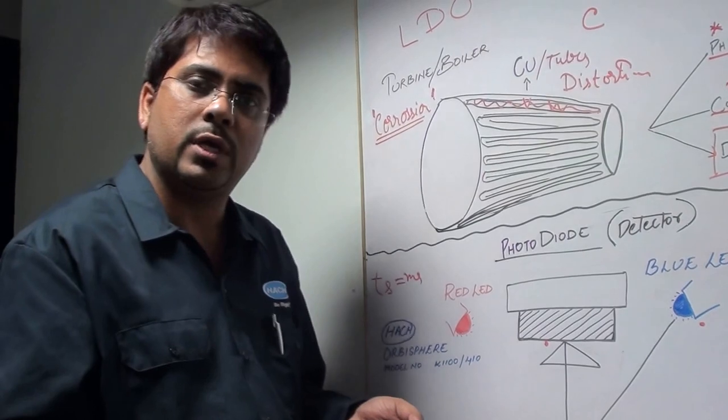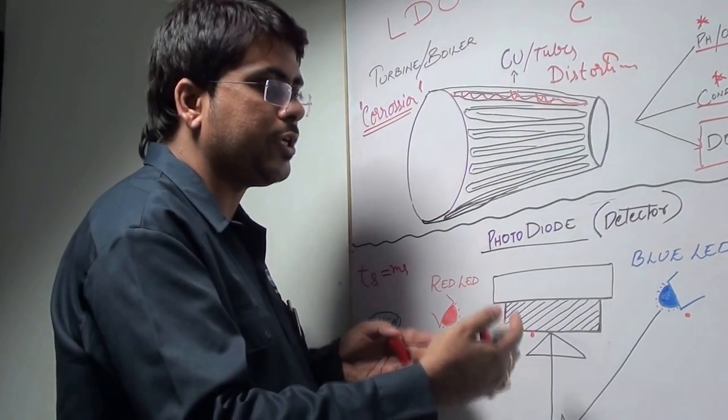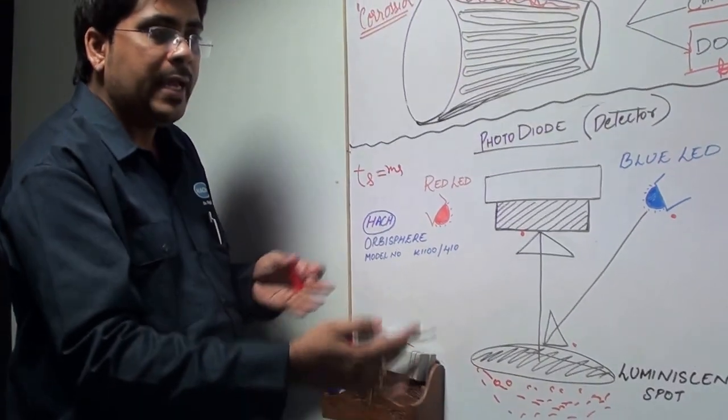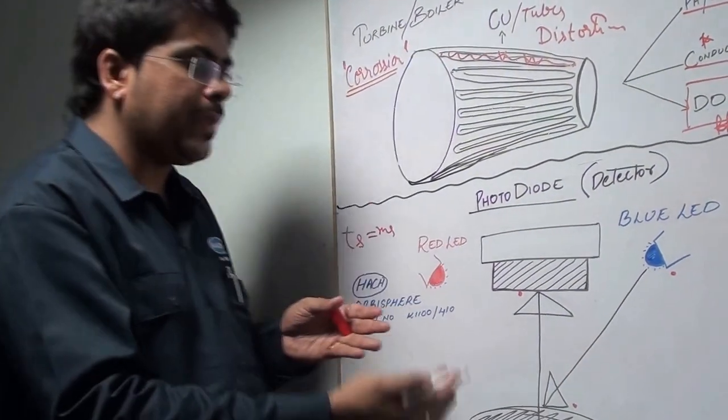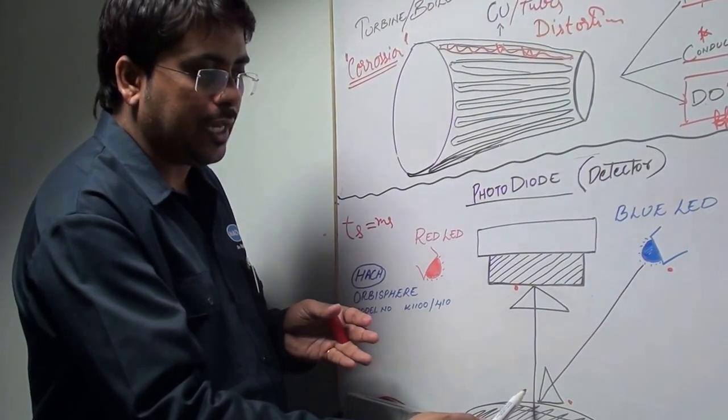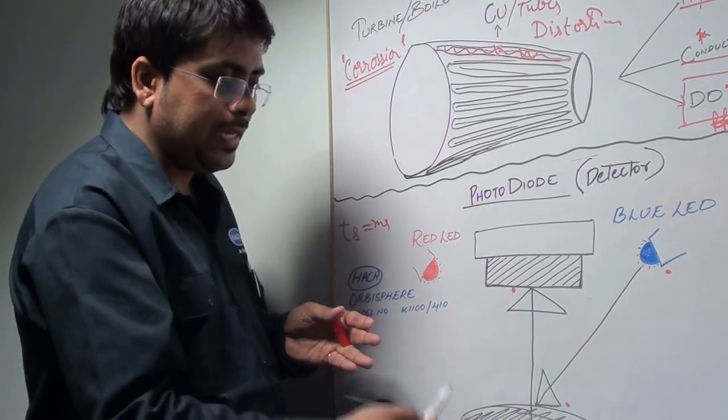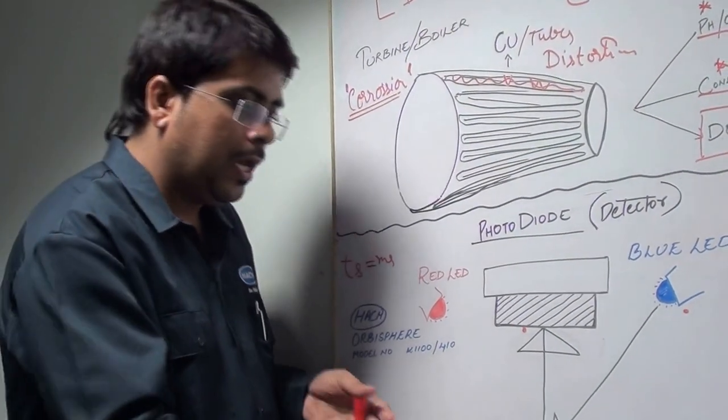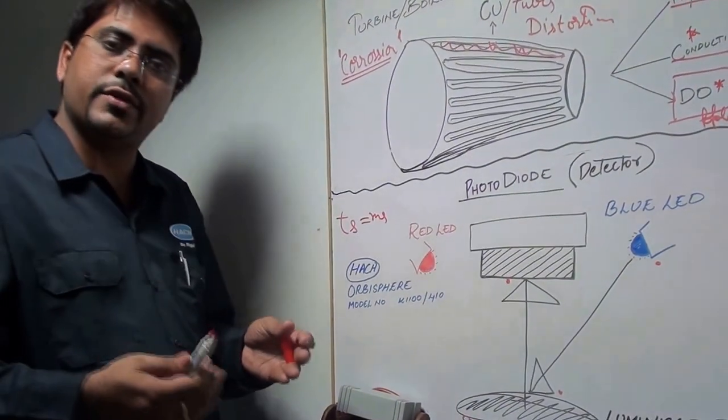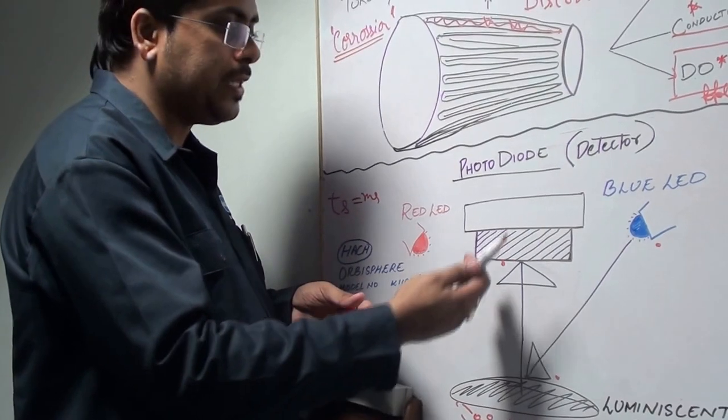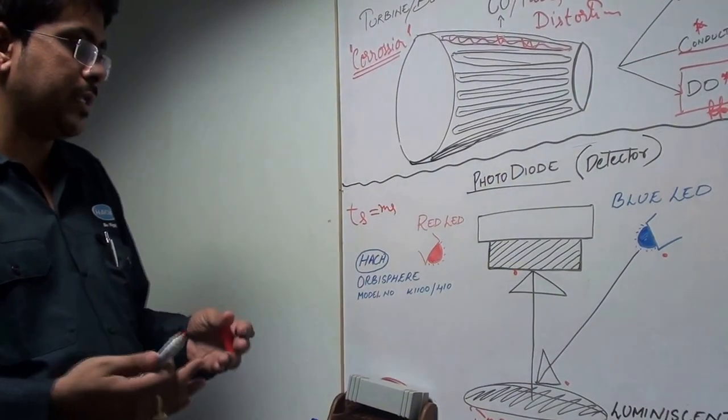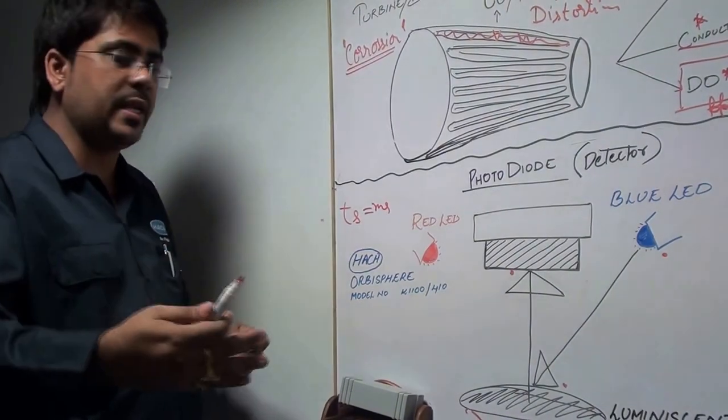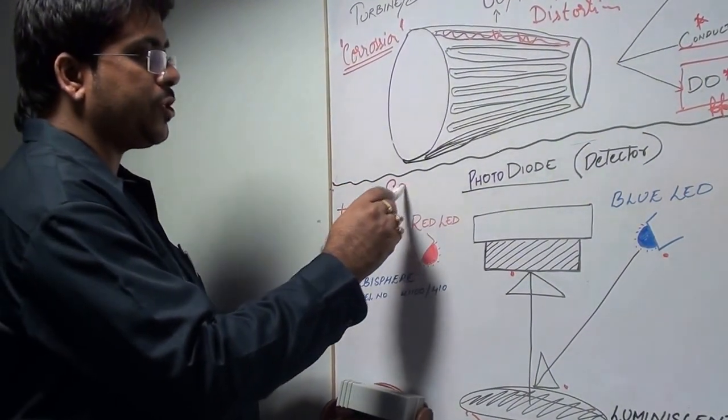This phase shift difference is being converted into the standard industrial 4 to 20 milliamp current output, and it gives your accurate concentration measurement of oxygen. When the concentration of oxygen in the sample is more, it will take very little time for the radiation of light to get detected at the detector, and the optical spot will get de-excited pretty fast. Conversely, when the oxygen concentration is less, it takes longer time to get detected. This time difference or phase shift is being converted to the relative 4 to 20 milliamp output to denote the concentration of dissolved oxygen in PPB.